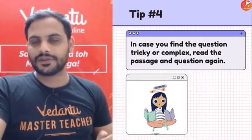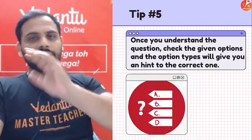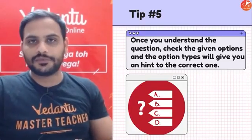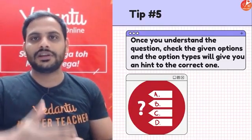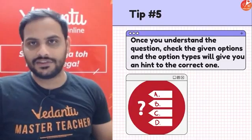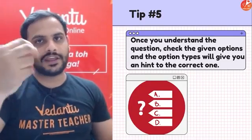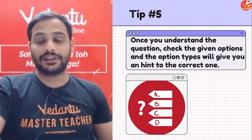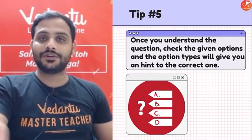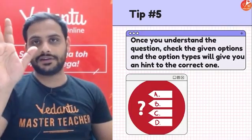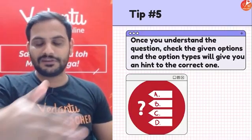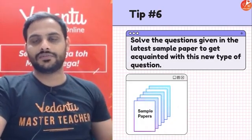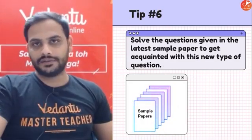Tip 5: Once you understand the question, always look at the options — the answer is right in front of you. Also try to use the elimination method. Even if you're not sure of the answer, try to remove which options cannot be correct. If you're making a silly mistake, elimination helps you identify that those options won't be your answer.